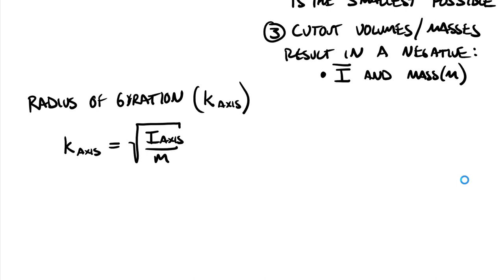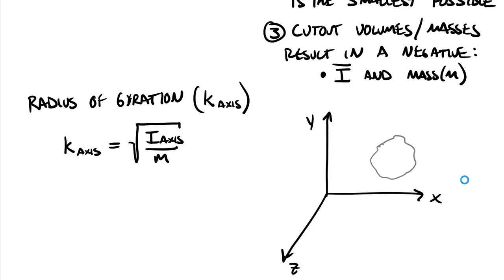The radius of gyration essentially collapses mass moment of inertia and mass into one single term. Consider a coordinate system with y-axis, x-axis, and z-axis coming toward you, with a three-dimensional mass in space. For the radius of gyration around the y-axis, we can think of taking this mass and extruding it into a very thin, long, small-radius cylinder.